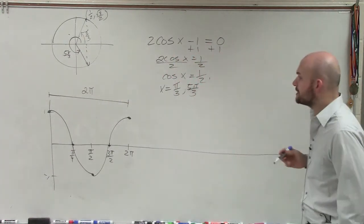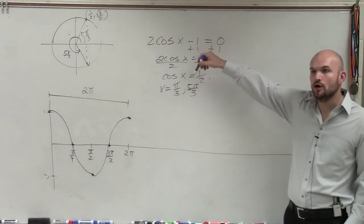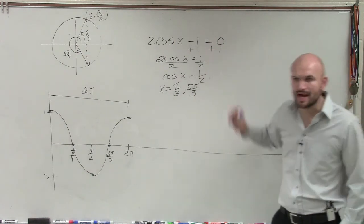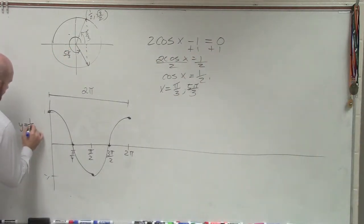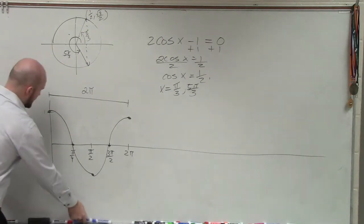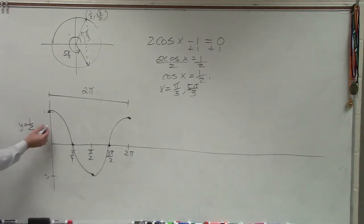Now again, what we're trying to do is we're trying to determine when is cosine of x equal 1 half. So what I can do is draw a line at 1 half. So if that's 1 and that's 0, we know 1 half would be right there.